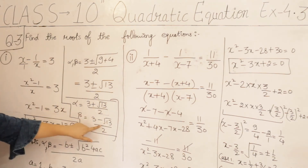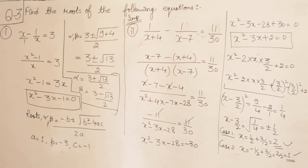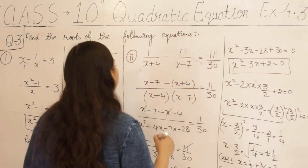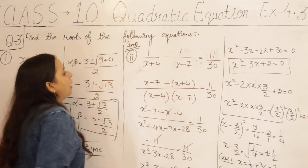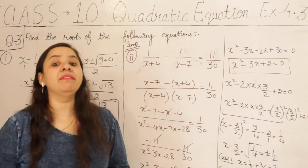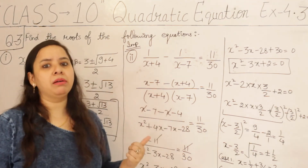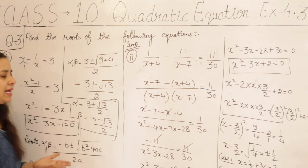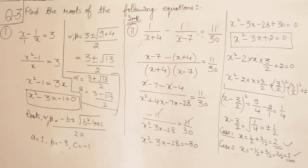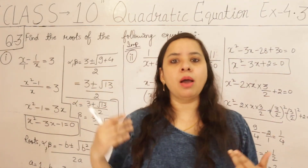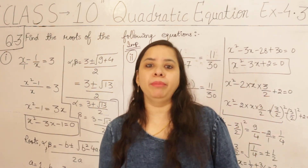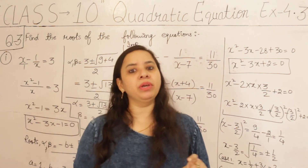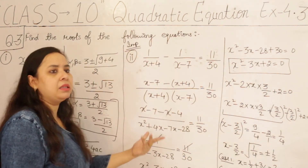The roots of the second equation are 1 and 2, and the roots of the first equation are 3 plus root 13 by 2 and 3 minus root 13 by 2. This was a very important question. The key steps are: take the LCM, simplify, convert to a quadratic equation, then apply any method to solve and find the roots. The equation was given in fractional form, so simplification was necessary first.